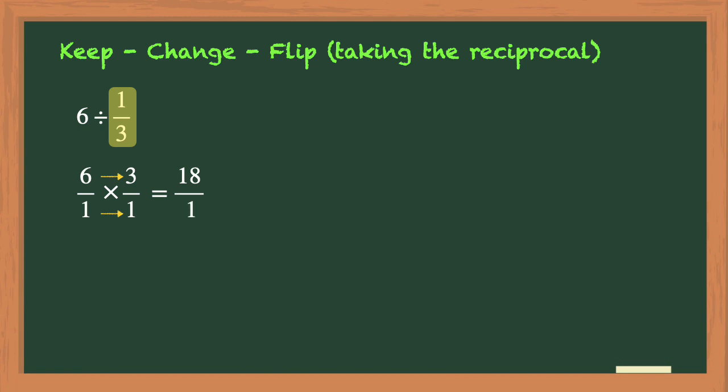As you can see, we have an improper fraction here that needs to be simplified. You can simplify this improper fraction by dividing the numerator of 18 by the denominator of 1. And 18 divided by 1 is just 18.